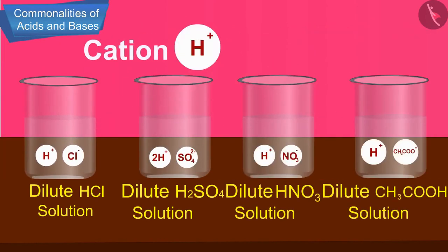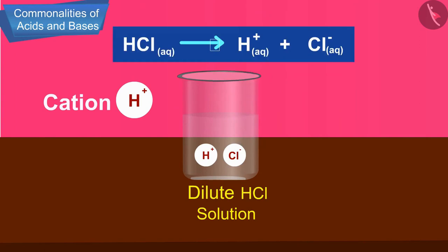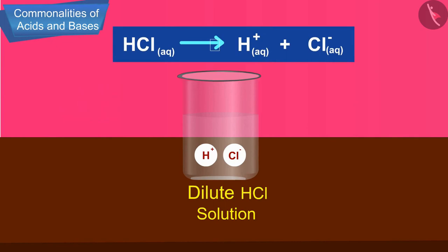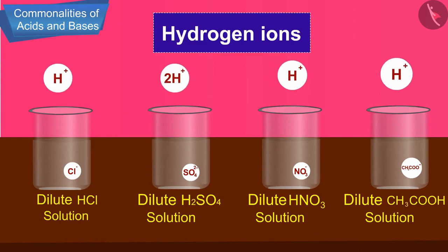The aqueous solution of an acid conducts electricity due to the presence of charged particles called ions. All acids contain hydrogen ions. When an acid is dissolved in water, it separates out as positively charged hydrogen ions, entering the solution as H+ ions. So, we can say that an acid is a substance which dissociates on dissolving in water to produce hydrogen ions (H+ ions). The common thing in all acids is that they produce H+ ions when dissolved in water.